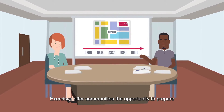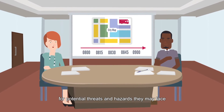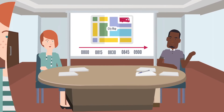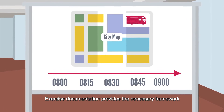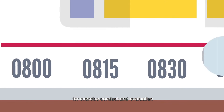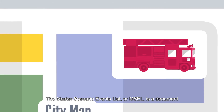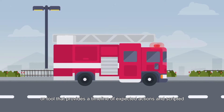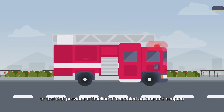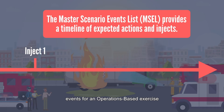Exercises offer communities the opportunity to prepare for potential threats and hazards they may face. Exercise documentation provides the necessary framework for exercise conduct and evaluation. The Master Scenario Events List, or MEASL, is a document or tool that provides a timeline of expected actions and scripted events for an operations-based exercise.